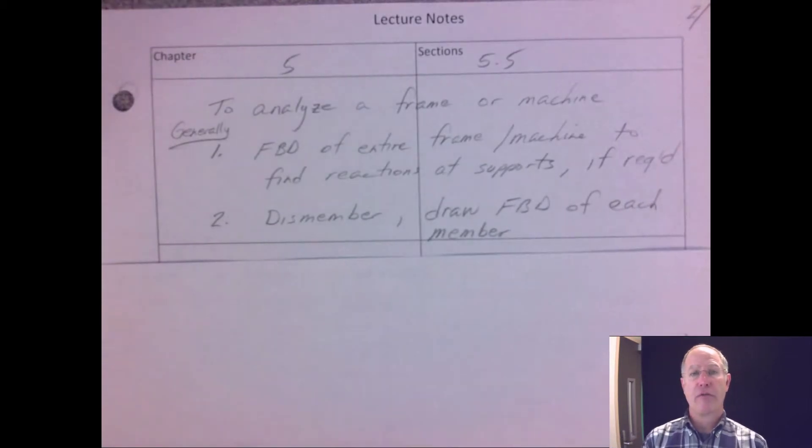And then you dismember the machine and draw a free body diagram of each member. Dismember—think of what we did in class the other day where we exploded that truss and looked at each member of the truss and each of the pins as well. So explode the thing into its components, and each component of a machine gets its own free body diagram.